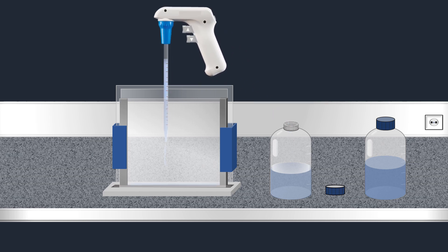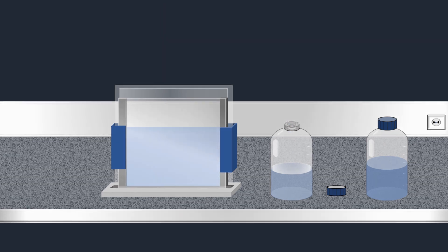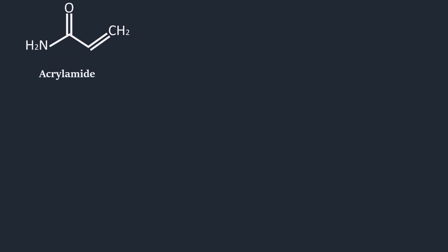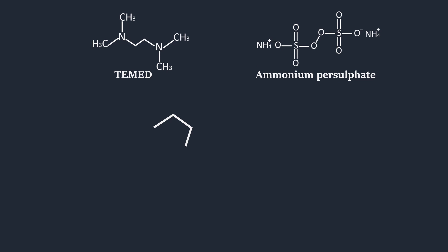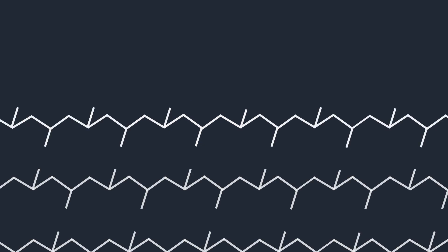The polymerization reaction is a vinyl addition polymerization initiated by a free radical generating system. Ammonium persulfate is used as the free radical initiator, while TEMED accelerates the rate of formation of free radicals from persulfate. These free radicals convert acrylamide monomers to free radicals which react with unactivated monomers to begin the polymerization chain reaction.